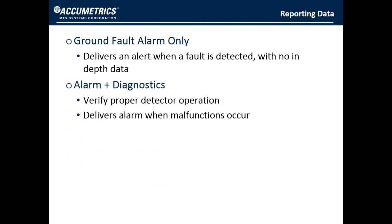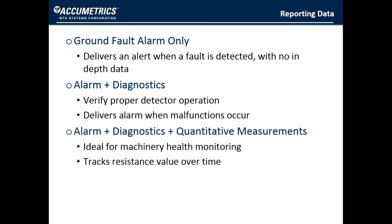Adding diagnostics that verify the proper ground detector operation or provide an alarm when the unit malfunctions gives the operator further confidence that he is really protected. And finally, having additional information like quantitative measurements for health or condition monitoring gives the operator a lot more insight to make the appropriate decision. These are the kinds of interfaces that are much better than just a simple ground fault alarm, and all of these are available with Accumetrics Earth Fault Resistance Monitor.